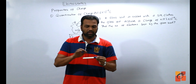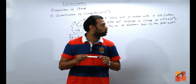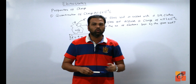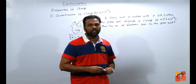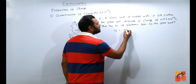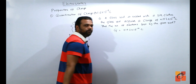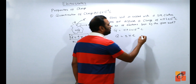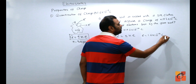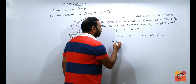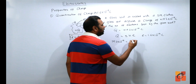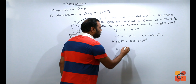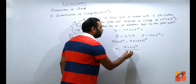अगर हम electron निकालते हैं तो positive charge बनेगा, और electron देते हैं तो negative charge बनेगा। यह depend होगा charge पर और integer N पर। Formula होगा Q = ±Ne, where N is an integer. अगर एक electron substitute करें तो charge = −e = −1.6 × 10⁻¹⁹ C। 2 electrons remove करें तो +2 × 1.6 × 10⁻¹⁹, 3 remove करें तो +3 × 1.6 × 10⁻¹⁹। That is the formula for quantization of charge.